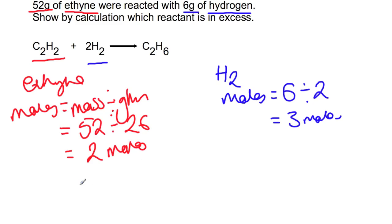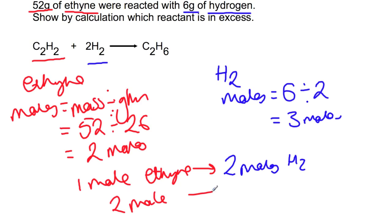If we now look at the molar ratio, 1 mole of ethyne requires 2 moles of H2. We've just calculated that we actually have 2 moles of ethyne, which would mean that we would need 4 moles of H2.